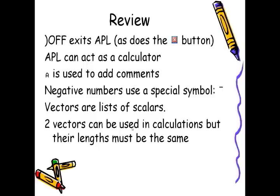We can use the lamp to add comments to our statements, that negative numbers use a special symbol, the high minus, that vectors are a list of scalars, and scalars are just simple numbers, simple items, and that two vectors can be used in calculations but that their length must be the same, or that one of them must be 1.